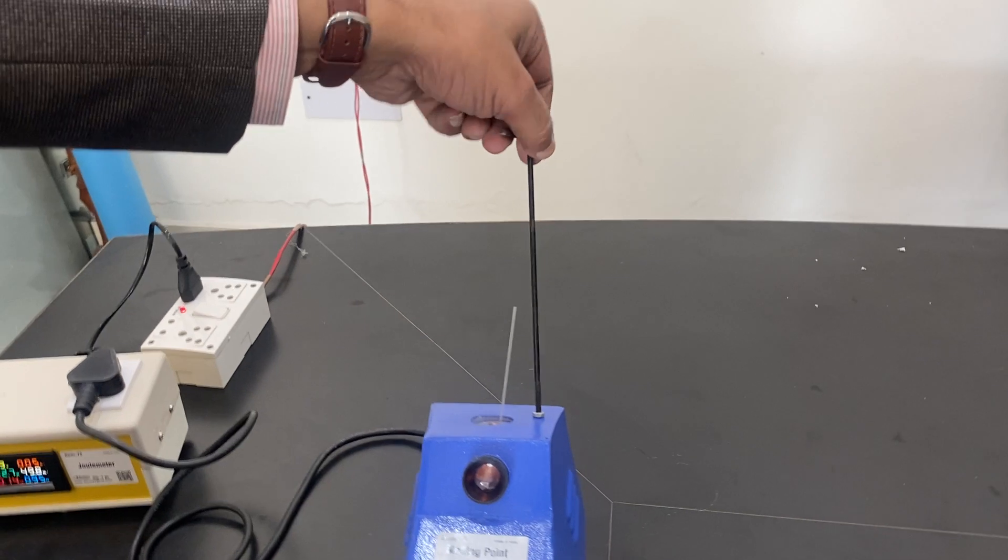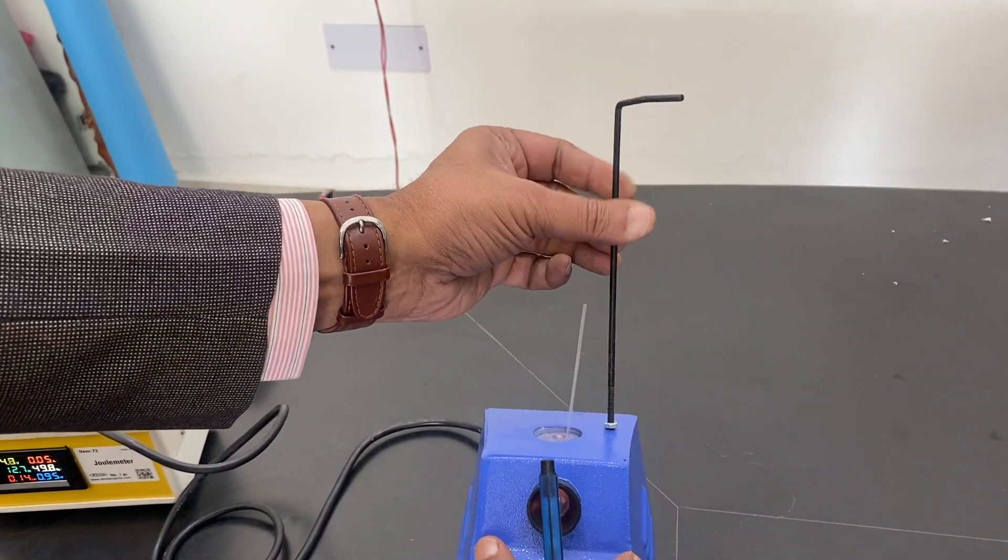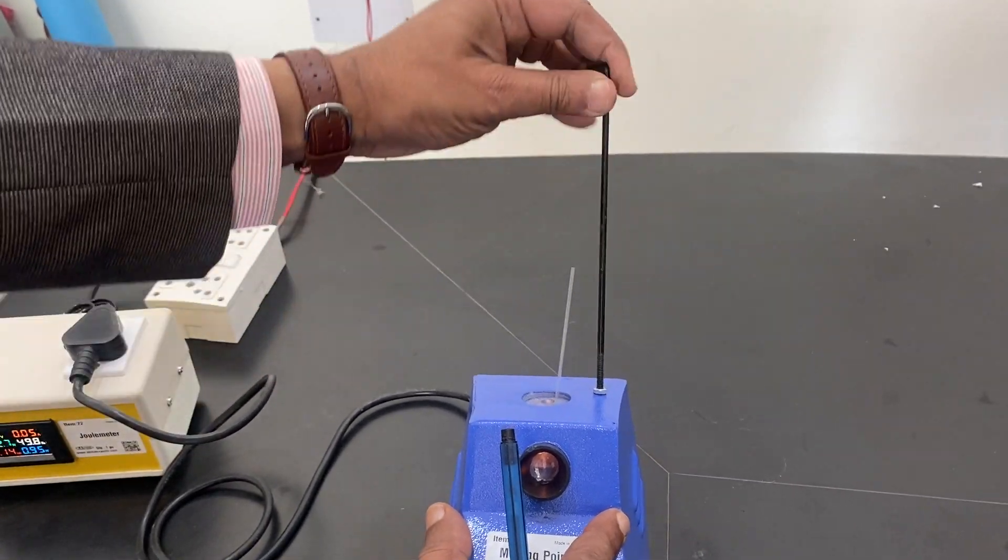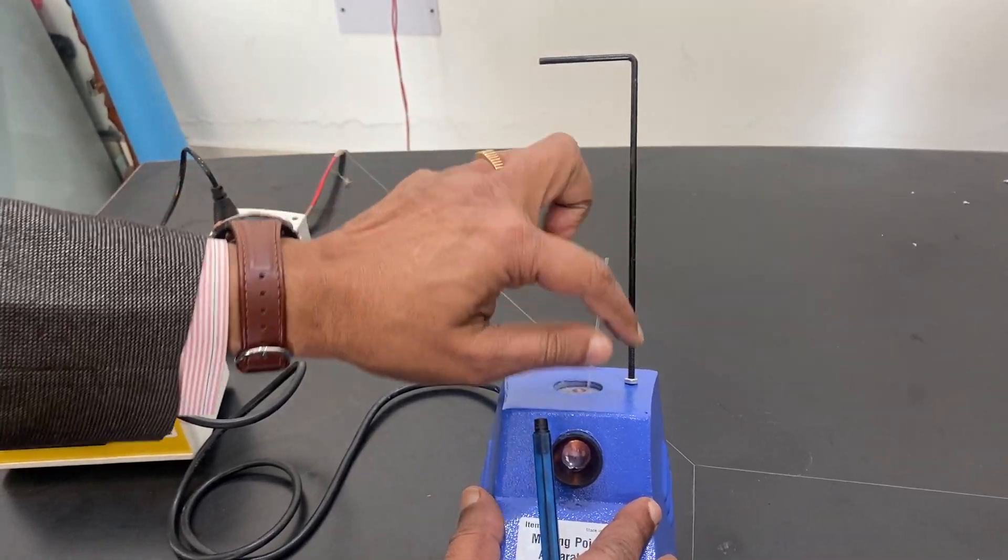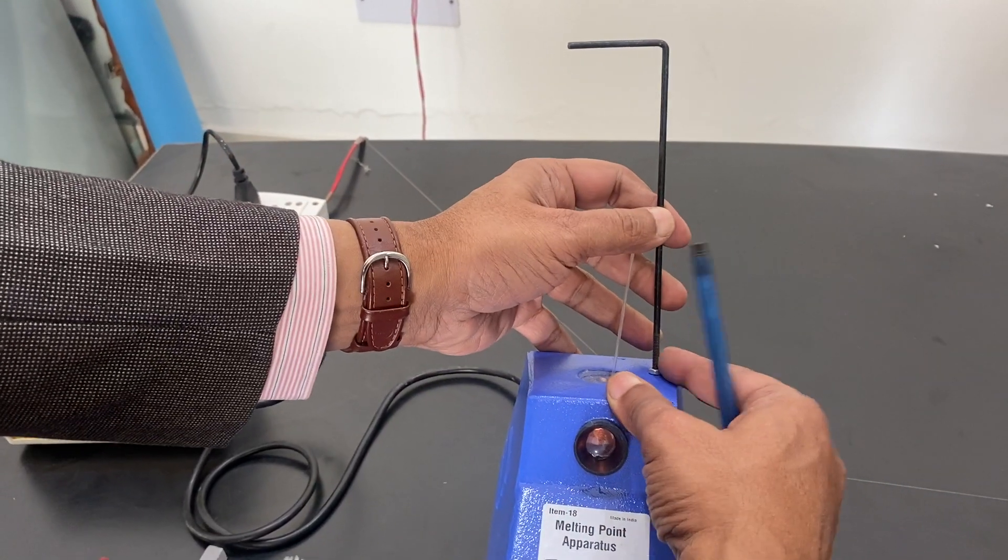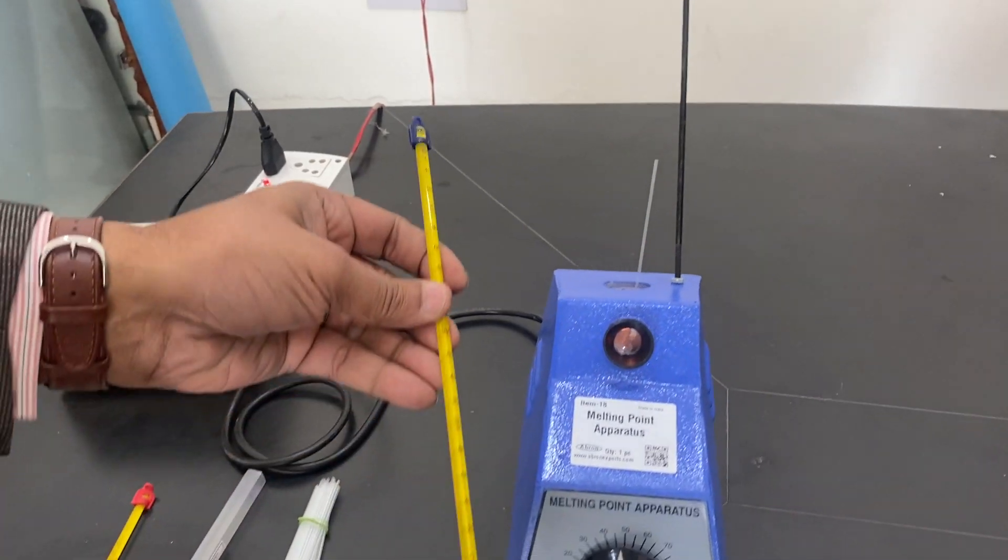Very easy to use. First of all, you have to fit this part and see that when you hold it, this is in the front side. There is a screw to tighten it so that it does not move. This is a thermometer.